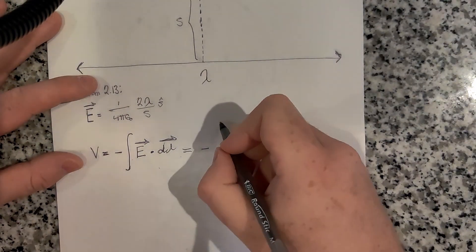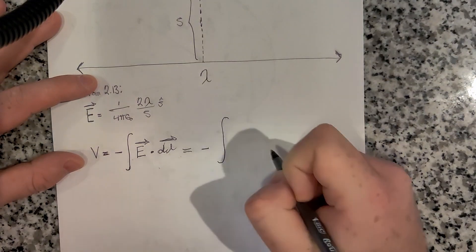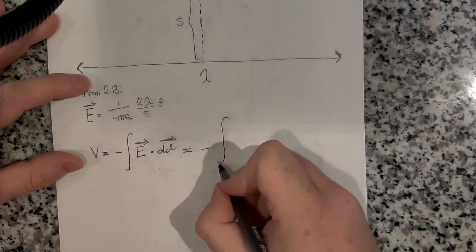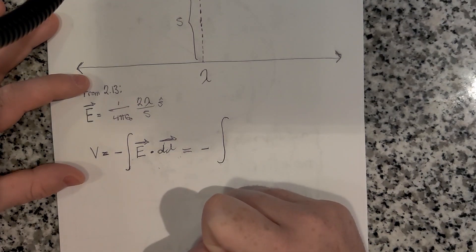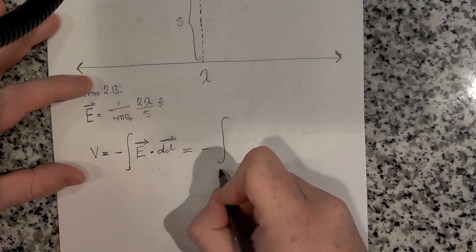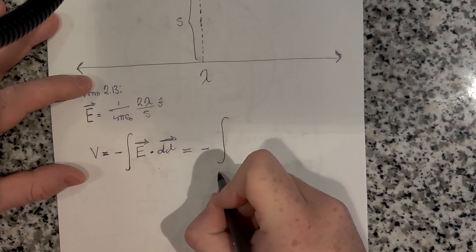So I'll write that out. We have negative of the integral, and we have to write our bounds. Our reference point for this is just going to be infinity, I believe. Will that work? No. I don't think infinity is going to work here.